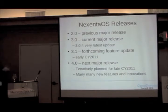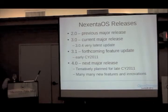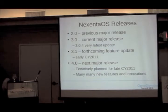Here's a bit of a timeline — a roadmap, though I hate calling these things a roadmap. The previous major release was 2.0, based on OpenSolaris Build 104, which by OpenSolaris standards is pretty ancient. I wasn't around at Nexena for that, so I don't have much knowledge of what's in 2.0. Trying to remember what was in Build 104 seems like so long ago.